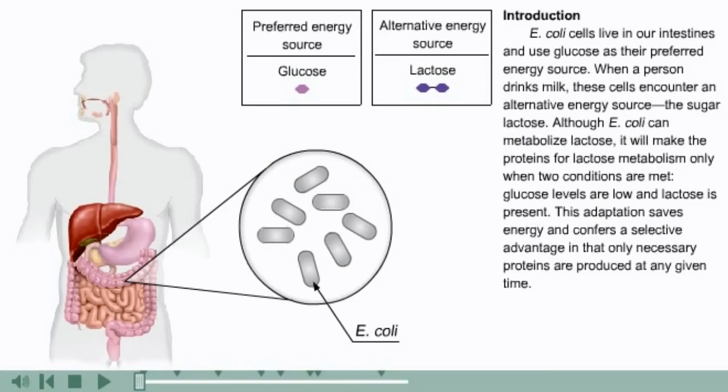E. coli cells live in our intestines and use glucose as their preferred energy source. When a person drinks milk, these cells encounter an alternative energy source, the sugar lactose. Although E. coli can metabolize lactose, it will make the proteins for lactose metabolism only when two conditions are met: glucose levels are low and lactose is present. This adaptation saves energy and confers a selective advantage in that only necessary proteins are produced at any given time.